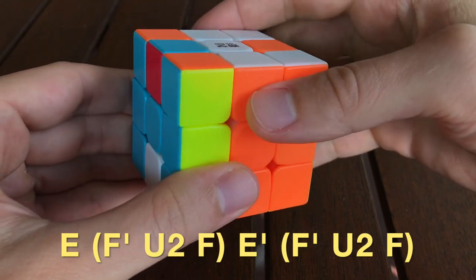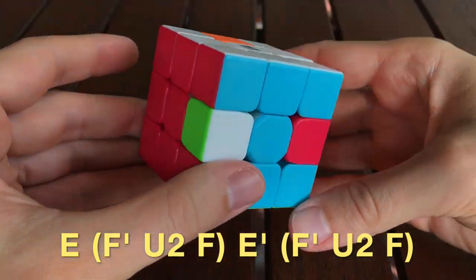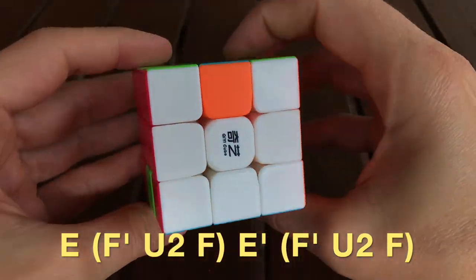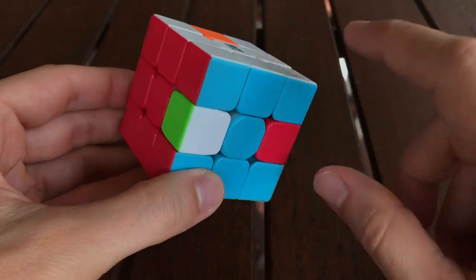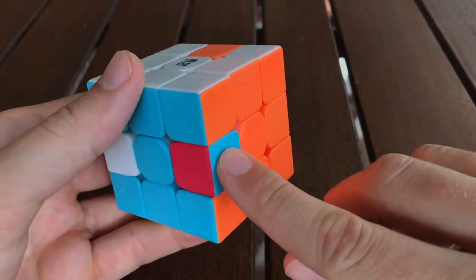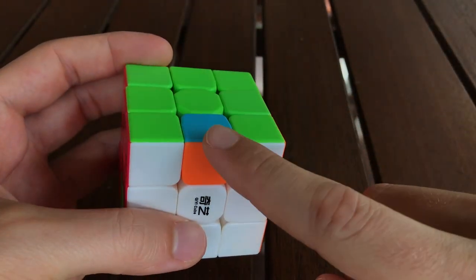And we can see that three edge pieces have permuted with each other. The red and blue piece went to the orange and blue side, orange and blue went to the upper back, and green and white went to red and blue.